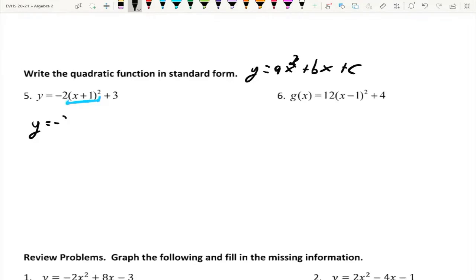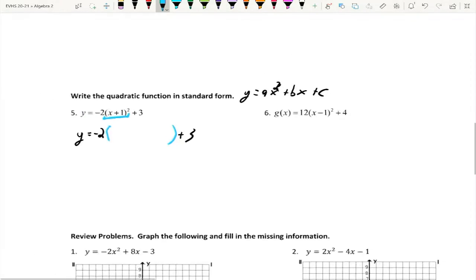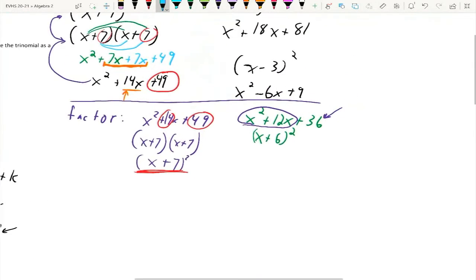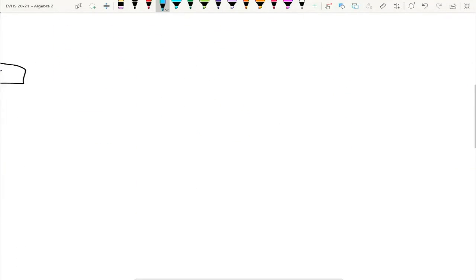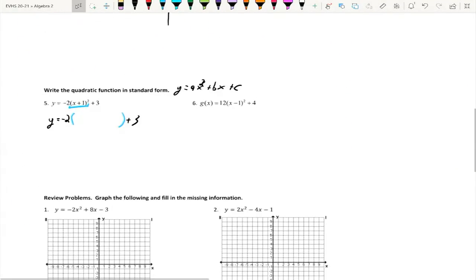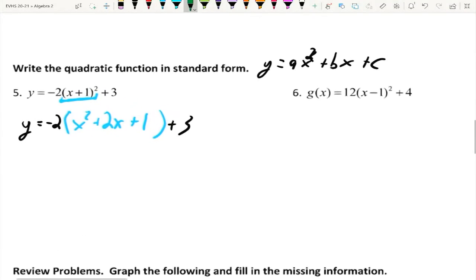So, the first thing we're going to do is we're going to multiply this out, which we practiced earlier. y = -2... Now, I'm going to put the parentheses for this, and then my +3 here on the end. We're going to go ahead and multiply out (x + 1)², which if you remember what we did up here at the beginning, we always said that it was double the 7 got 14, square the 7 got 49. So, we're going to double and then square. So, x² double the 1 and you get 2, square the 1 and you get 1.